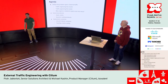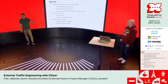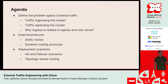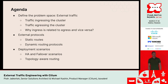Let's first have a look at the agenda. We'll start with a bit of level setting and explain what we mean by external traffic and what types of external traffic we're going to be talking about. We'll then move on to talk about external protocols and what can be used to orchestrate external routing. Finally, we'll talk about deployment scenarios, covering some of the more advanced scenarios, and maybe even have time for a bit of the lab if the lab gods are on our side today.